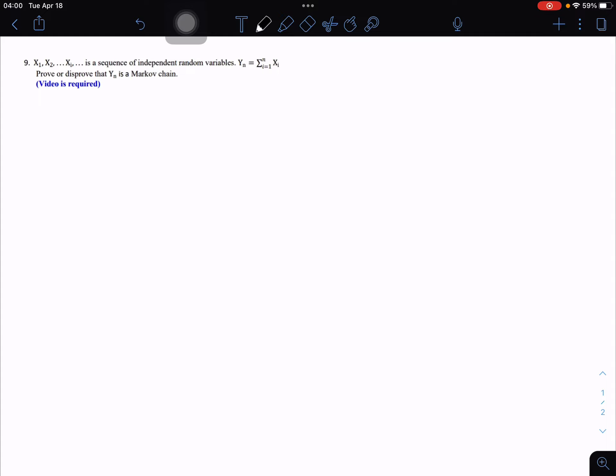it must satisfy the following condition: P(Y_{n+1} = y_{n+1} | Y_n = y_n, Y_{n-1} = y_{n-1}, ..., Y_1 = y_1) equals P(Y_{n+1} = y_{n+1} | Y_n = y_n). Let's consider the process yn.